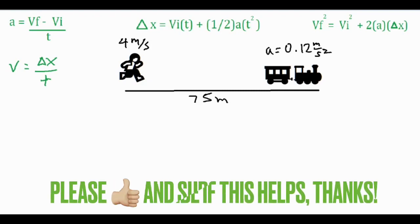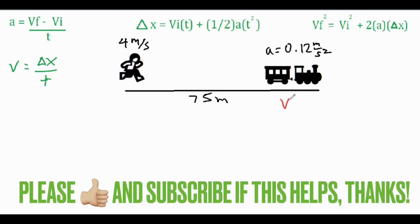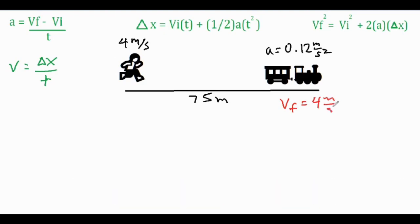So what we're going to do is we're going to say that this train has a final velocity of 4 meters per second, because once the train reaches 4 meters per second there's no way the kid is going to reach it at that point anymore because they're just moving at a constant velocity of 4 meters per second.